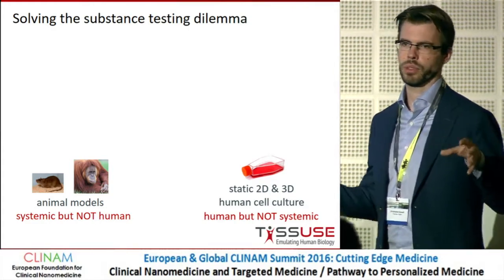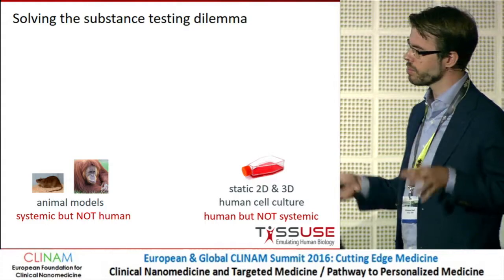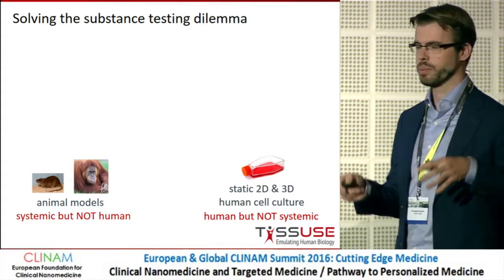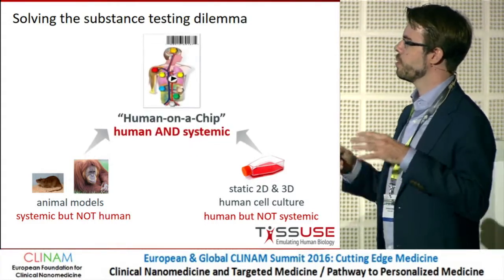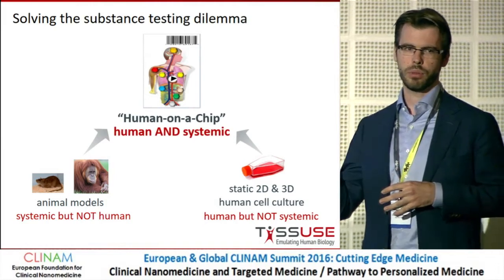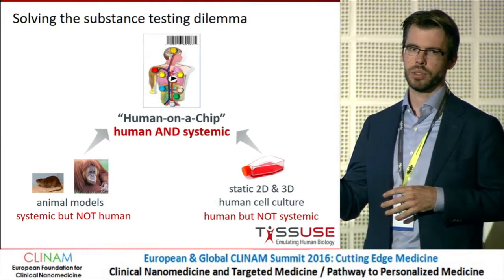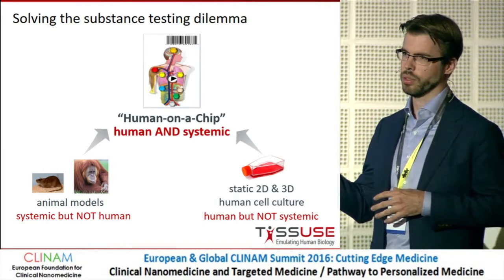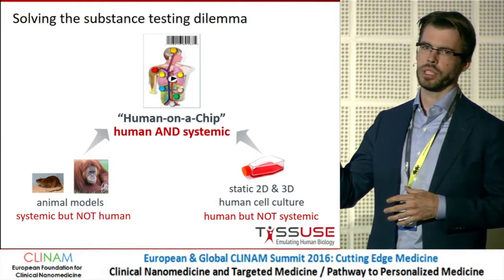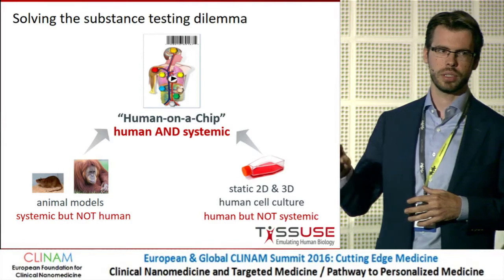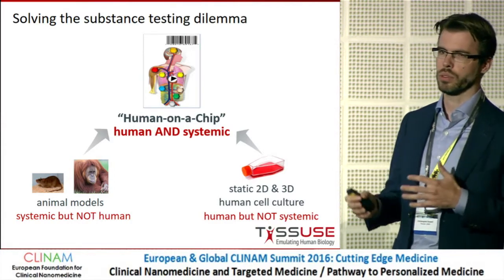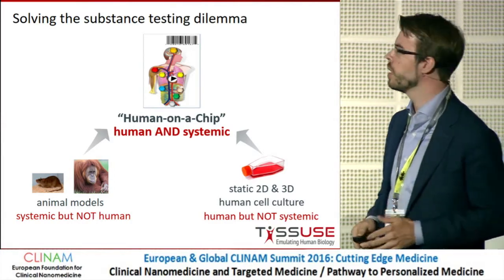Now we want to take the best of both worlds and combine that into a human-on-a-chip system. So we have human 3D cell culture models for the different organs in a microfluidic system, connected so we can actually observe things like organ crosstalk and first pass effects.